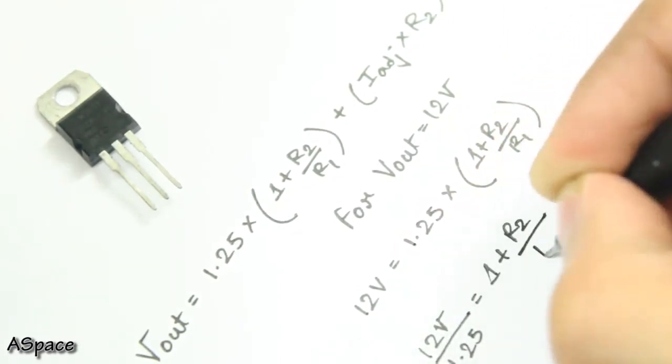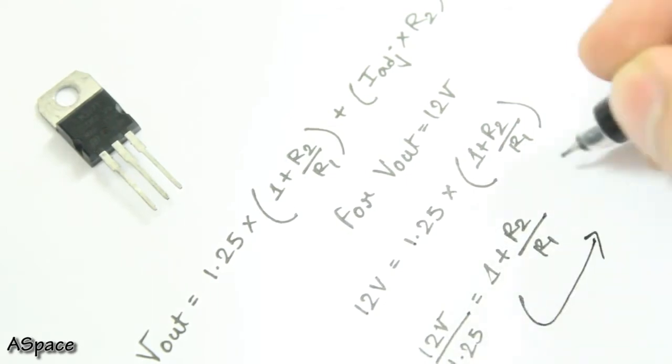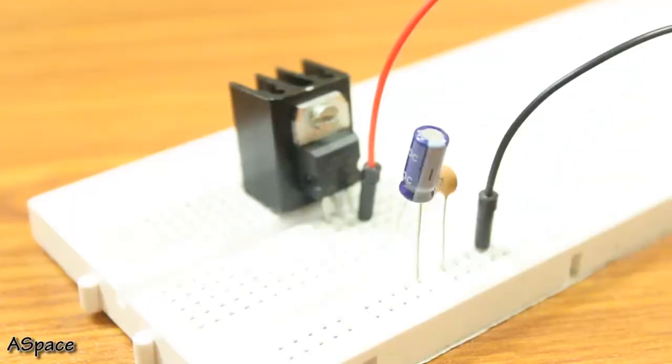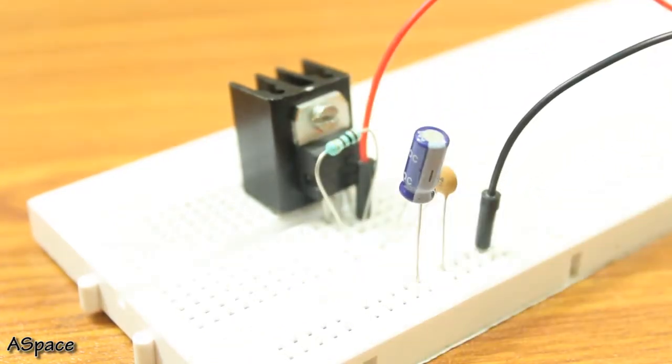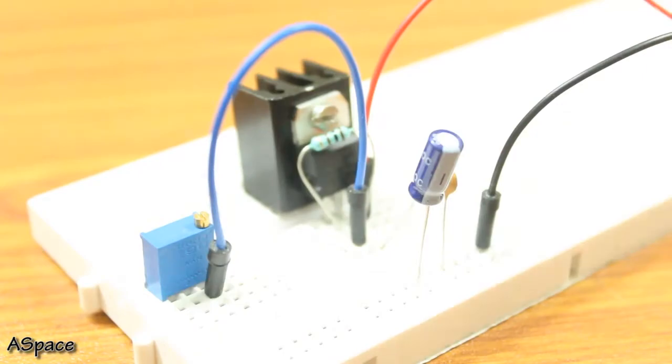I took R1 as 220 Ohm and from that I got R2 to be 1.5K. Now arrange the two resistors in a voltage divider format with respect to the adjust pin of LM317.